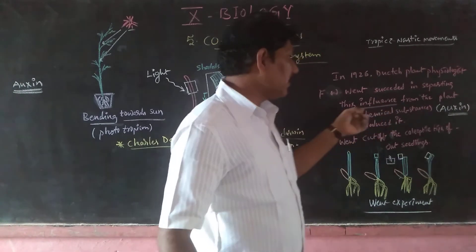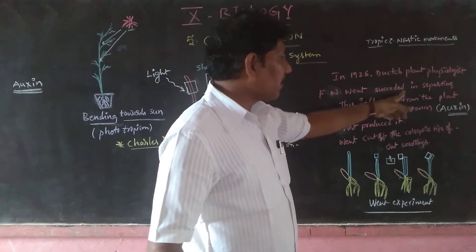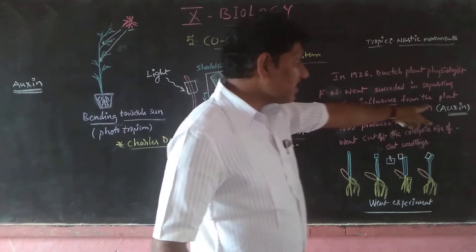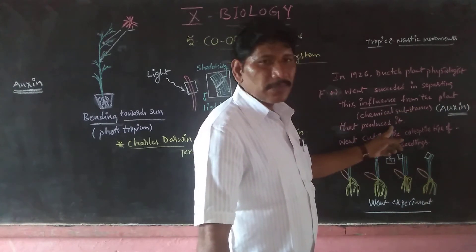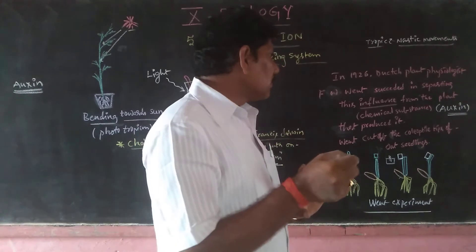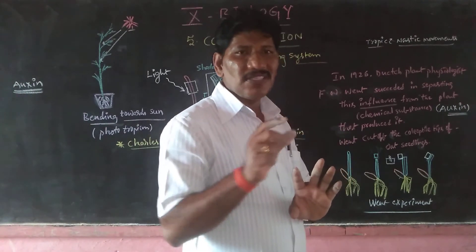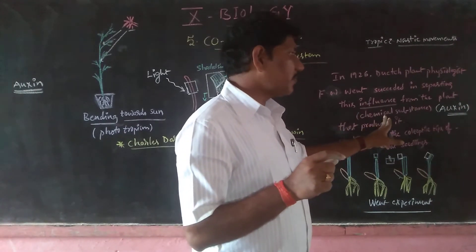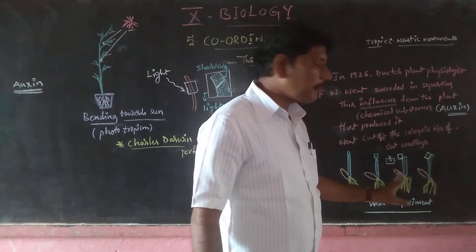F.W. Went is the scientist — the physiologist — who succeeded in separating this chemical influence from the plant. The influence means the chemical substance. This chemical substance produced by the plant — the influence, meaning impact — is what we call a chemical substance. Later, it was called the first plant hormone, named auxin, from F.W. Went's experiment.